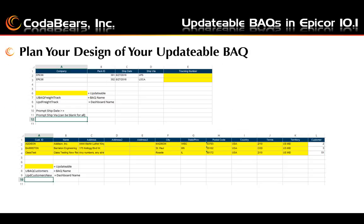This slide shows an example of some planning you might do for your updatable BAQs. The top area shows a plan for an updatable BAQ to update tracking numbers on your daily shipments. Here we list all the fields that we want to see, and highlighted in yellow the field that we want to be updated, along with the BAQ name and dashboard name. We also include selection criteria — a prompt for a ship date greater than or equal to, and a prompt for a ship via, which can be blank to return all ship vias.